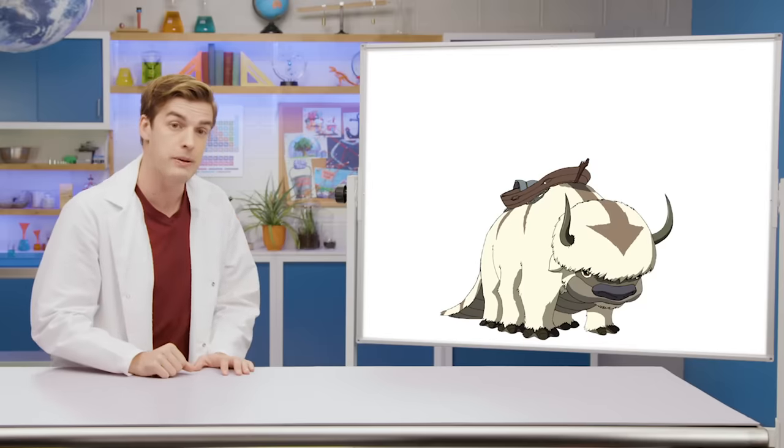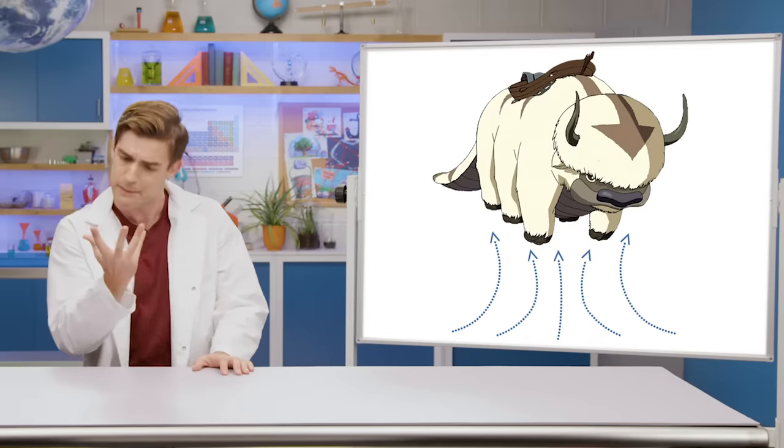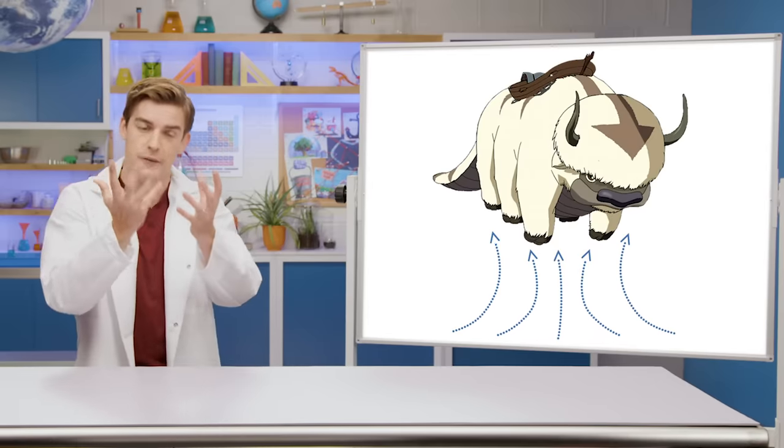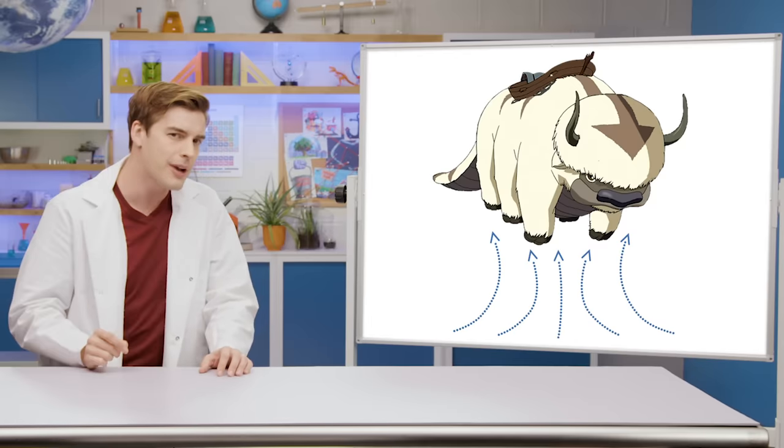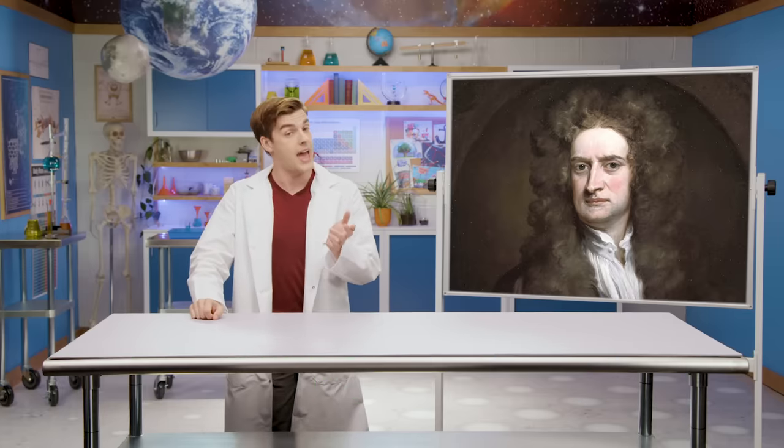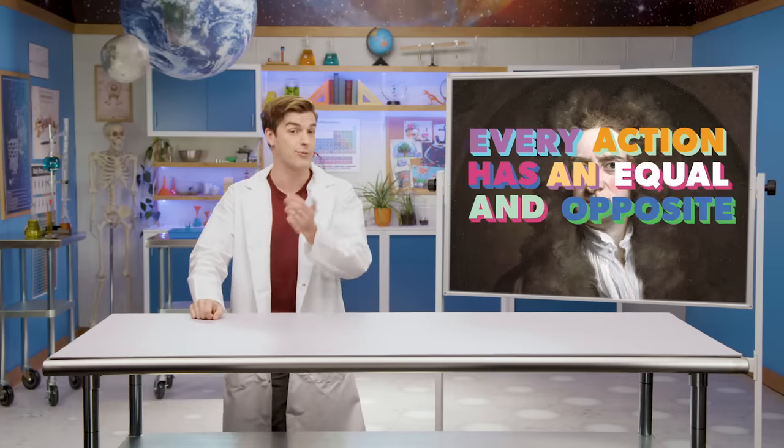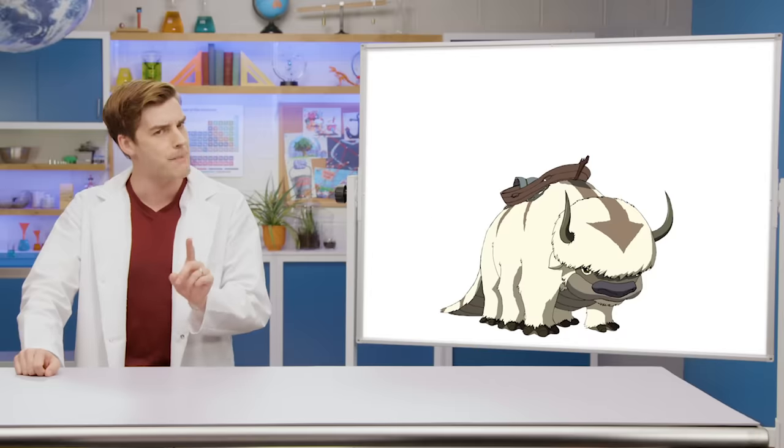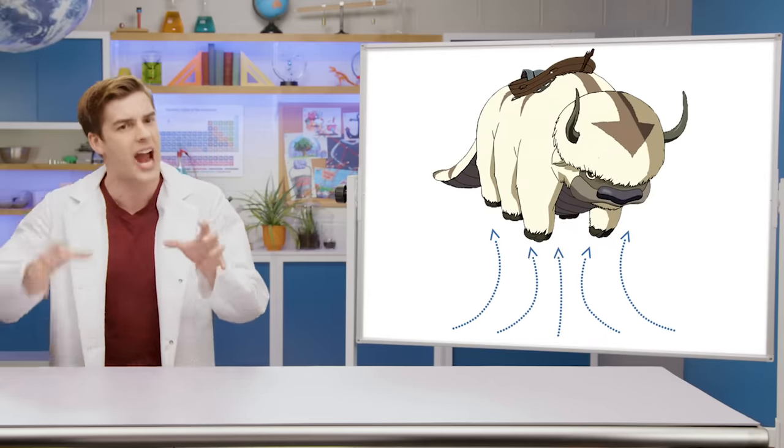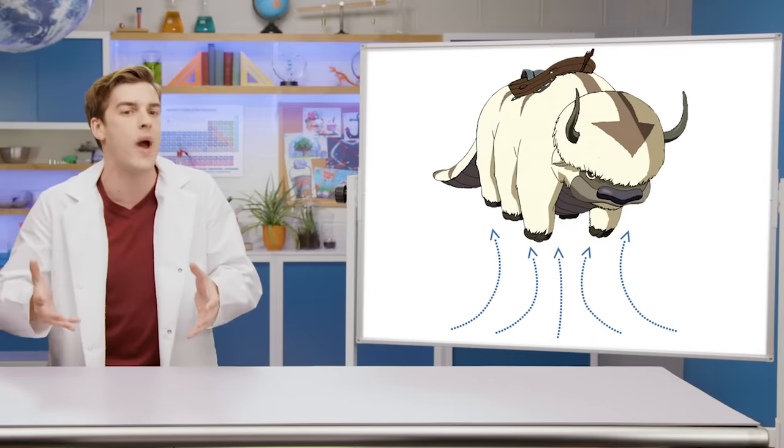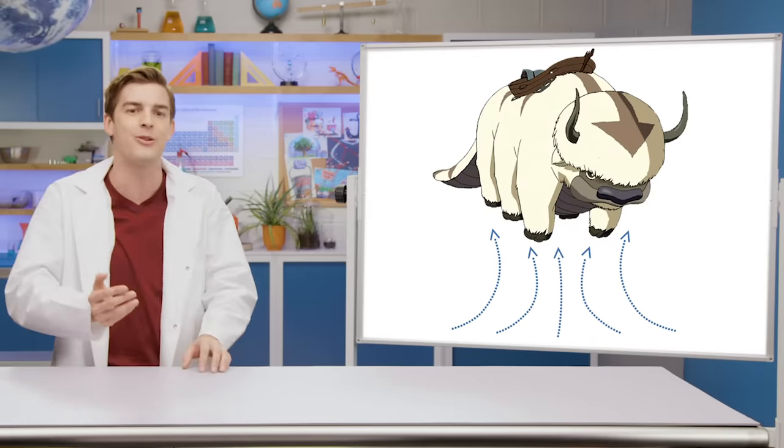The obvious option here would be for Appa to blast air at himself up from below and launch himself into the sky. But think about how much force that would take. According to Newton's third law of motion, every action has an equal and opposite reaction, which means that Appa would need to hit himself with a blast of air at least equal to his own weight in order to lift off the ground. I guess you could call that one an Appa-sit reaction.